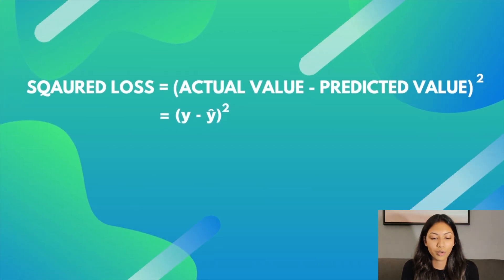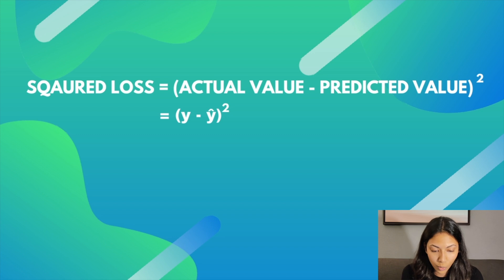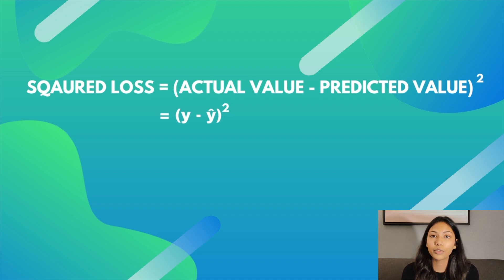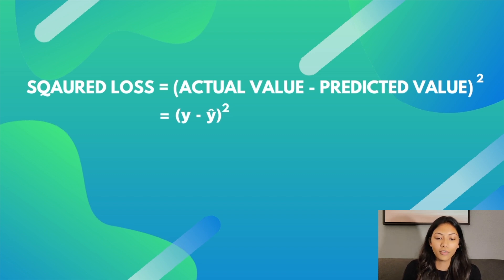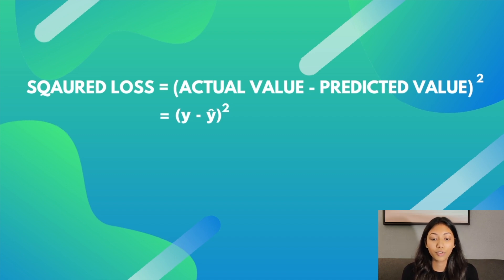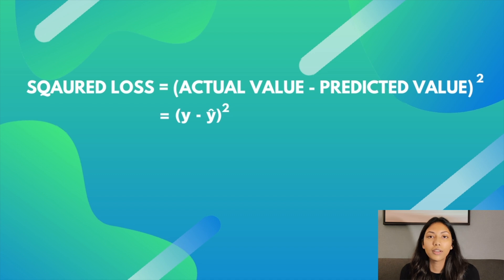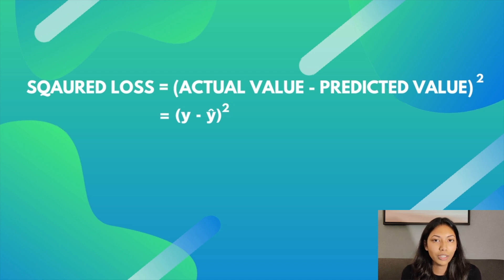Squared loss is the square of the actual value minus the predicted value. The actual value is represented by y and the predicted value is represented by ŷ (y hat). This mathematical language is very important to remember — when reading papers or articles about machine learning, y hat refers to the predicted value and y refers to the actual value. The formula (y − ŷ)² refers to the squared loss at one particular data point.